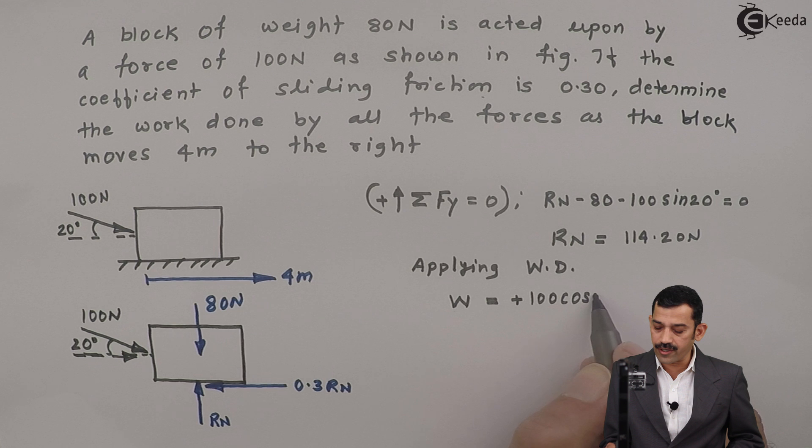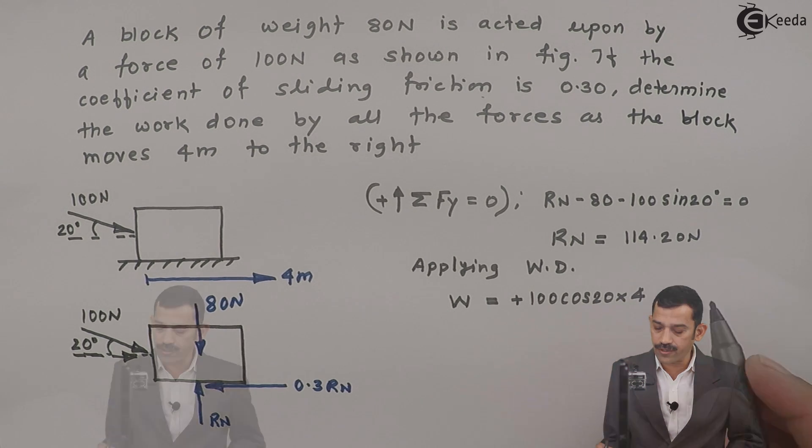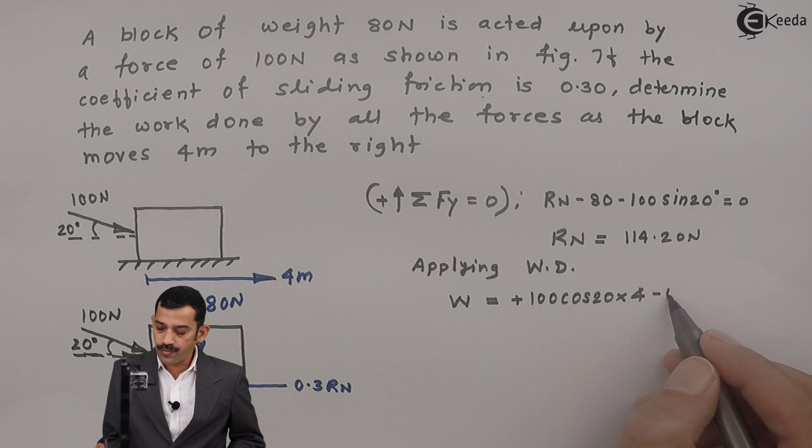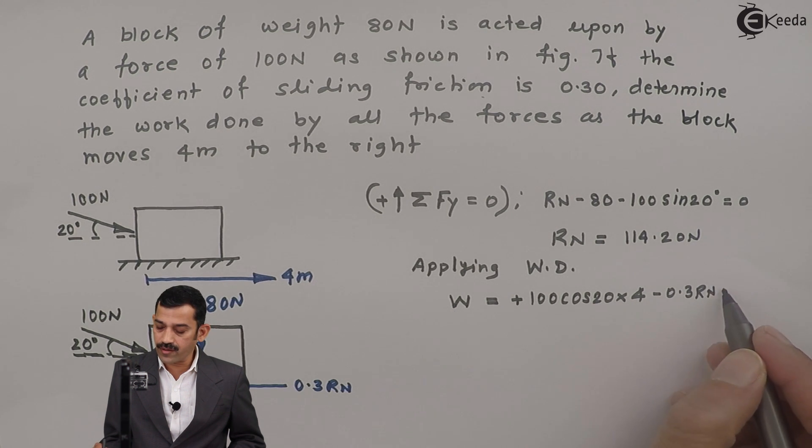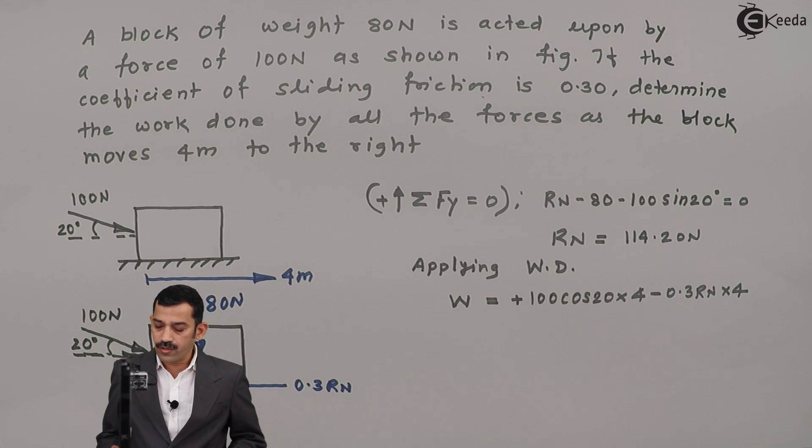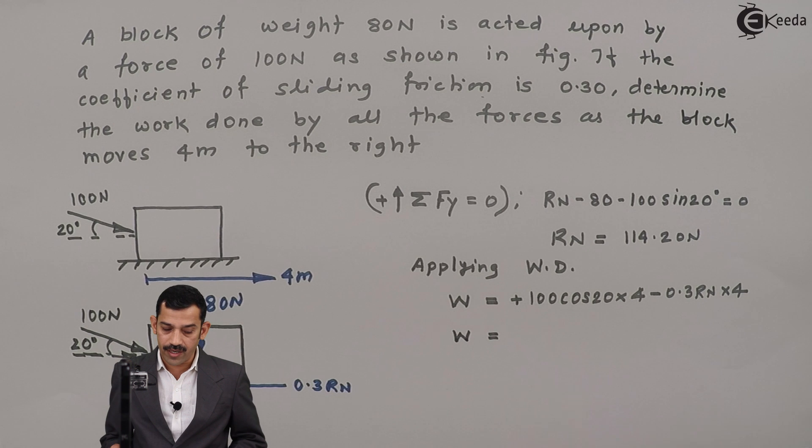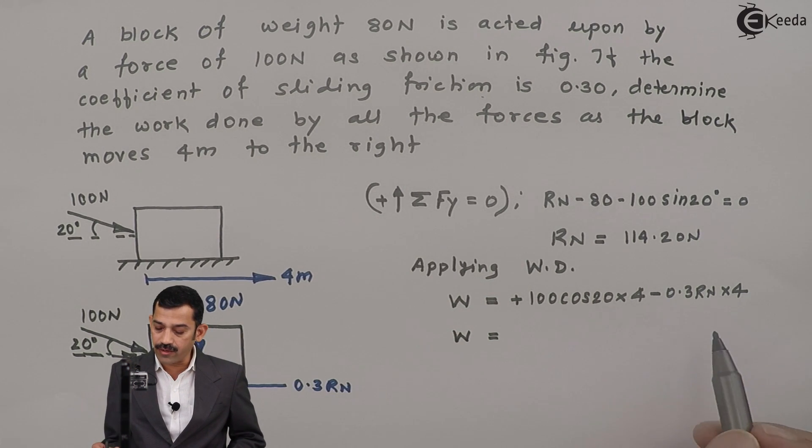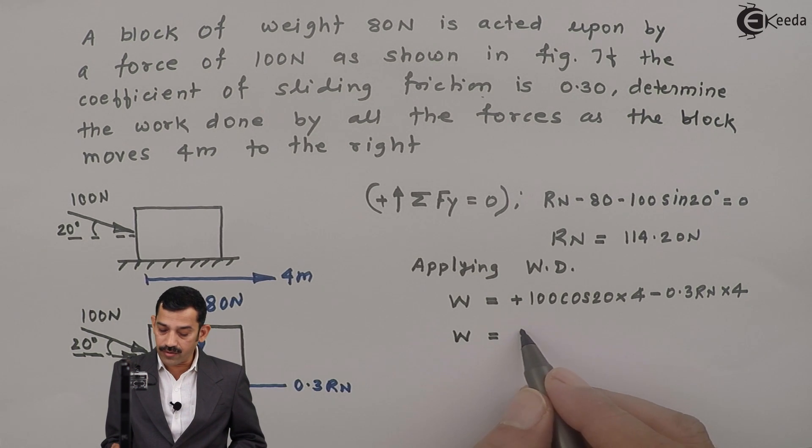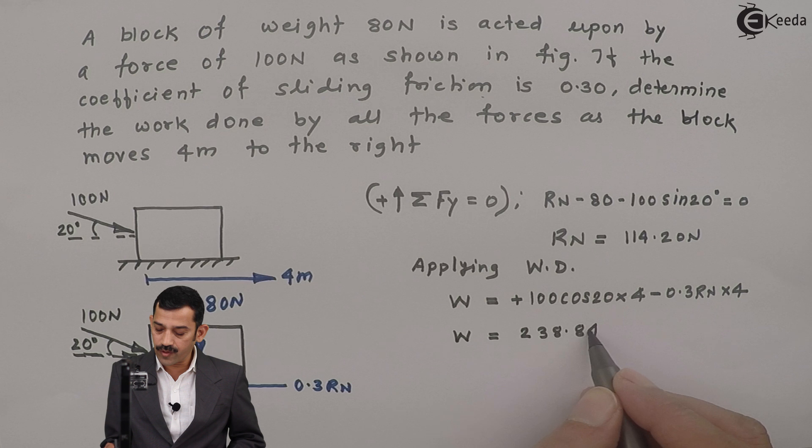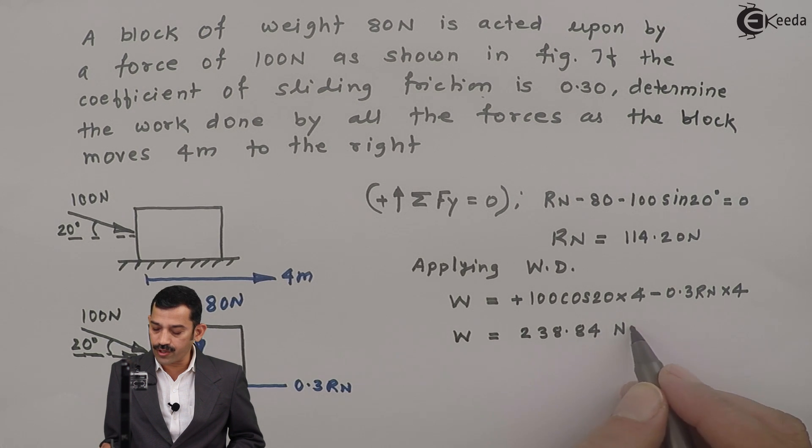Work done by force is 100 cos of 20 into 4 meter, which is positive, minus 0.3 into RN into 4. Why this work done is negative? Because force is acting in leftward direction and displacement is in rightward direction. Therefore, if you calculate using calculator, substituting RN as 114.20 Newton, this work done comes out to be 238.84, with units of force into displacement.